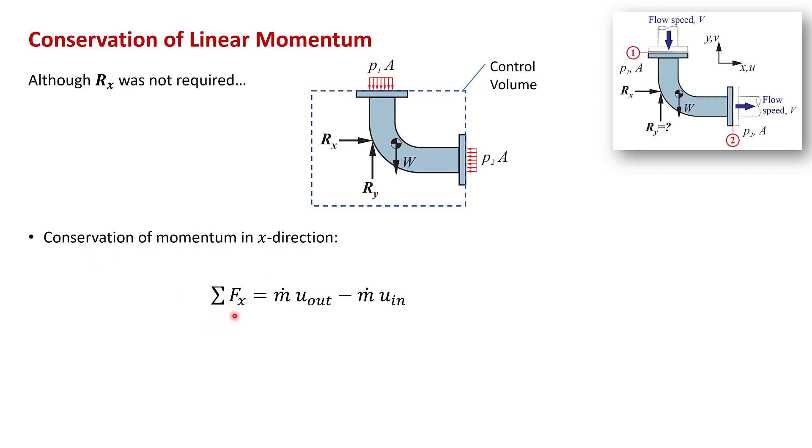So the sum of the forces in the x direction on the control volume equals the rate of momentum out in the x direction minus the rate of momentum in. And that becomes m dot u2 minus u1. Notice again that u is the x component of velocity.